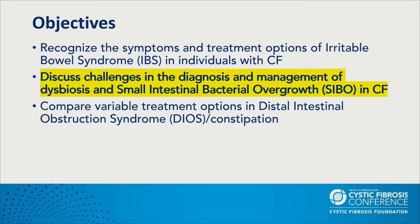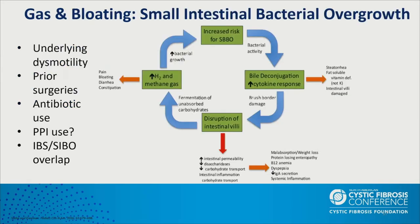Now regarding challenges in the diagnosis and management of dysbiosis and small intestinal bacterial overgrowth: our CF population endorses gas and bloating, likely due to underlying dysmotility, multiple prior surgeries, and frequent antibiotic use. SIBO leads to bacterial activity, bowel deconjugation, increased cytokine response, and symptoms such as steatorrhea, fat-soluble vitamin deficiency, and intestinal villi damage. This leads to brush border damage, increased intestinal permeability, loss of disaccharidases, decreased carbohydrate transport, and intestinal inflammation — ultimately resulting in malabsorption, weight loss, and protein-losing enteropathy.